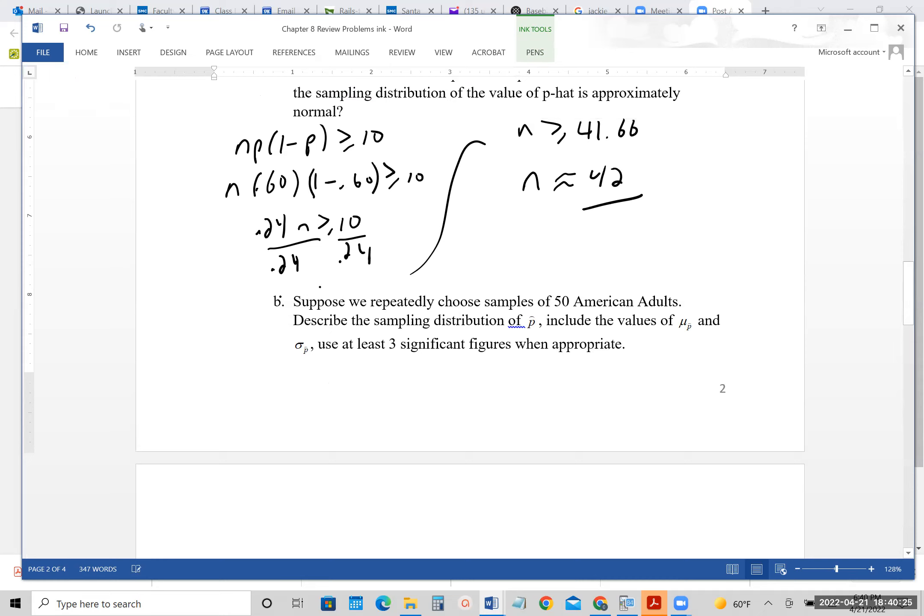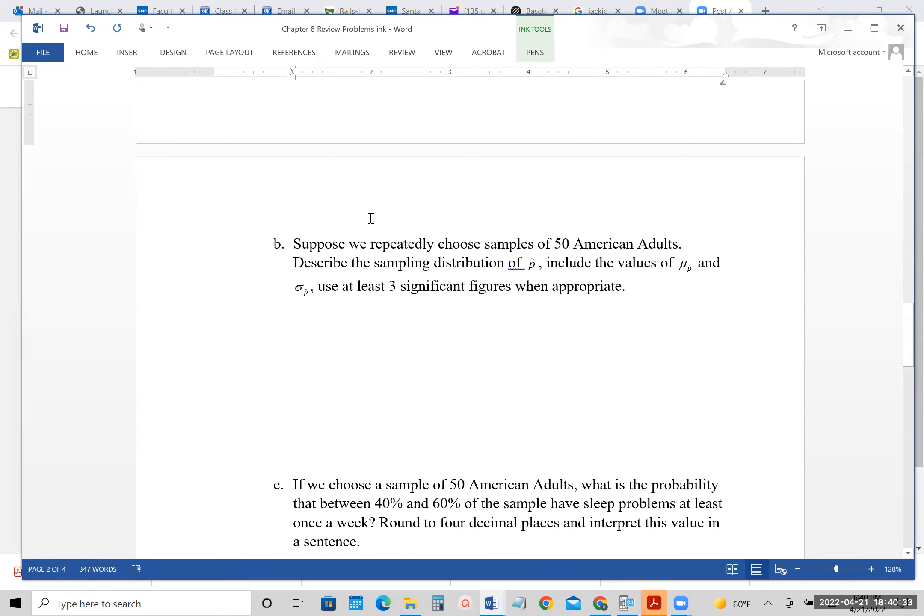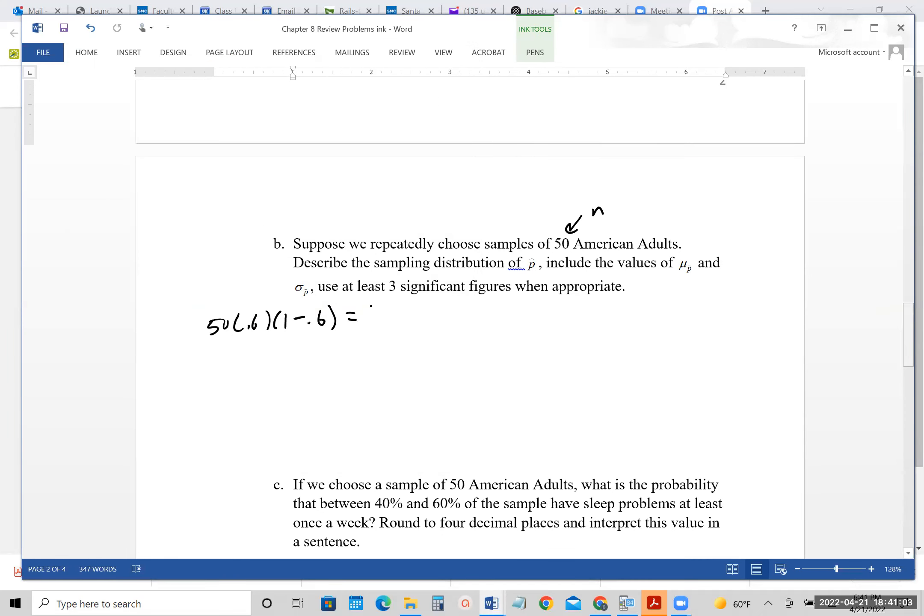Let's look at part B. Suppose we repeatedly choose samples of size 50. So that'll be our N, which is big enough. Describe the sampling distribution of P hat. Include the values of mu of P and sigma of P. So we would know that 50 times 0.6, 1 minus 0.6. We can just quick do that calculation. 50 times 0.6, parenthesis, 1 minus 0.6. And we get 12. This is greater than or equal to 10. So that's check.